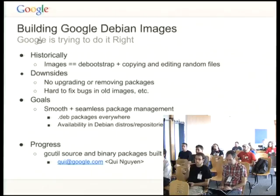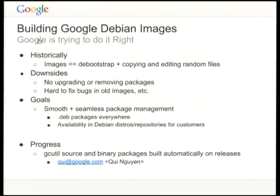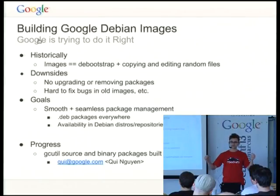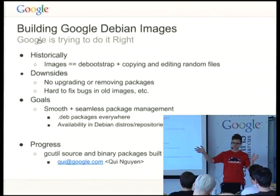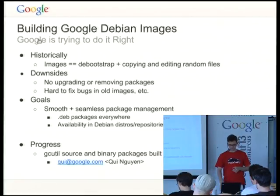We'd like to make that a lot better, and we'd also like to get those things into the mainline Debian source tree, or Debian release tree, just like we were talking about yesterday, in order to maybe one day brand our Debian image as official. We've been making some progress on this since we first announced and released our Debian images. We've been starting to convert some of our tools, and we've actually got some nice automation almost complete due to WeNugen.